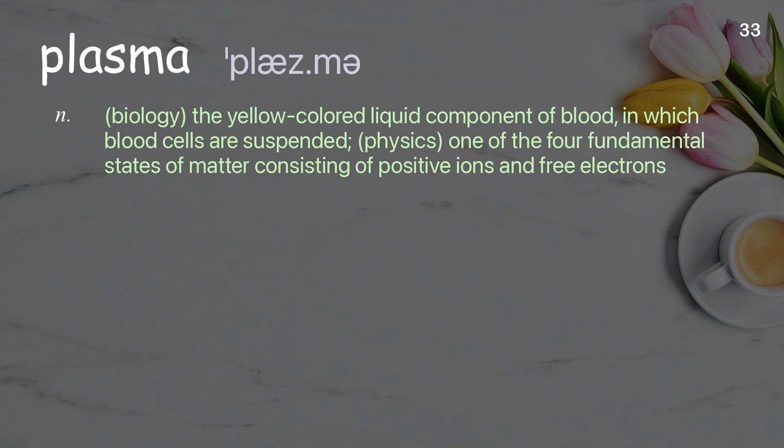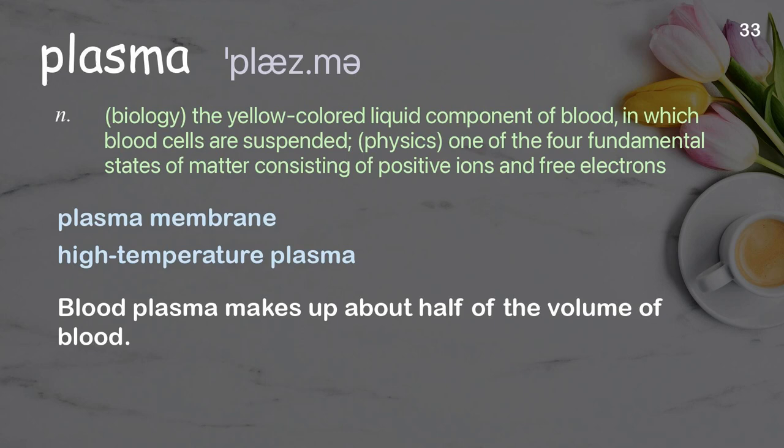Plasma: Biology — the yellow-colored liquid component of blood in which blood cells are suspended. Physics — one of the four fundamental states of matter, consisting of positive ions and free electrons. Examples: Plasma membrane, High-temperature plasma. Blood plasma makes up about half of the volume of blood.